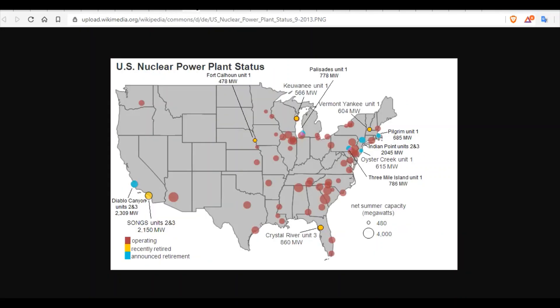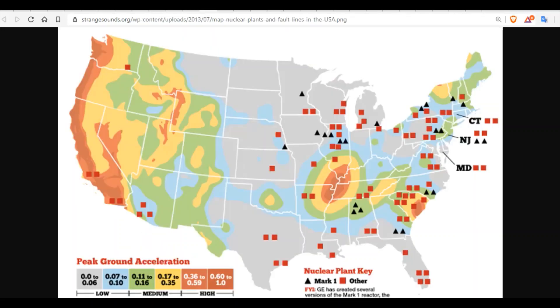And then there's nuclear power plants. Do not live downwind of any of these pink spots. Do not live within 500 miles of a pink spot. Do not live downwind from a pink spot ever. Then lay over the nuclear power plant and the fault risk map and stay away.